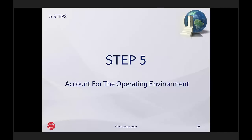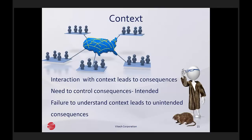The one we want to address is the context system — the system in which our design will live. The interaction with the context is going to lead to consequences. When we design a system and place it into the context, we're putting it into the system in which the problem exists. We hope that the interaction will lead to the consequence of solving the problem. But we have to be careful because we need to control the consequences so that we only get the intended consequences. A failure to adequately understand the context system leads to unintended consequences, and that's always bad news.